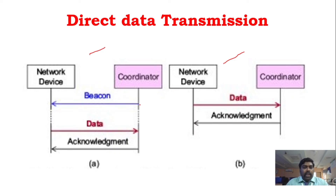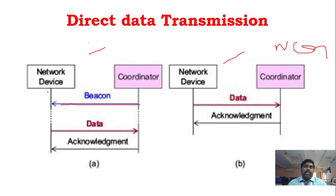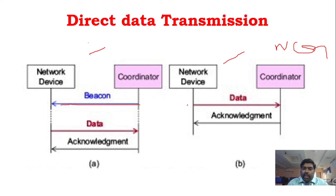In non-beacon mode direct transmission, the device directly transfers data and the coordinator sends an acknowledgement — the coordinator and network device cannot enter sleep mode. In indirect transmission, the network device sends a data request to the coordinator first, and then the coordinator sends data to the network device.